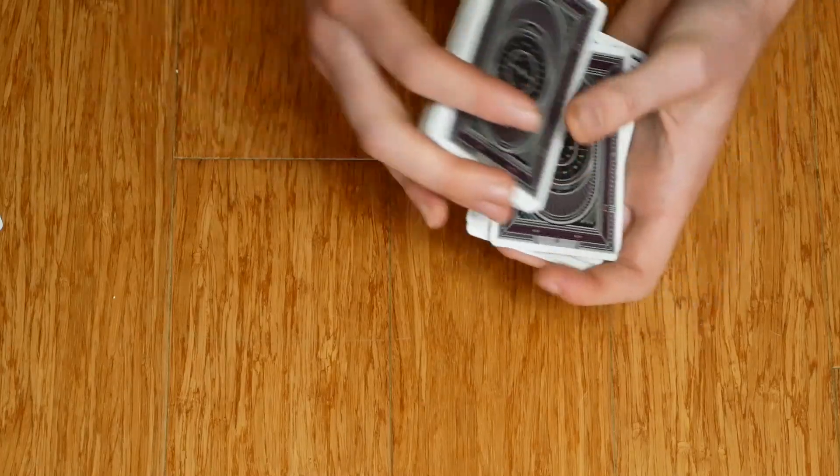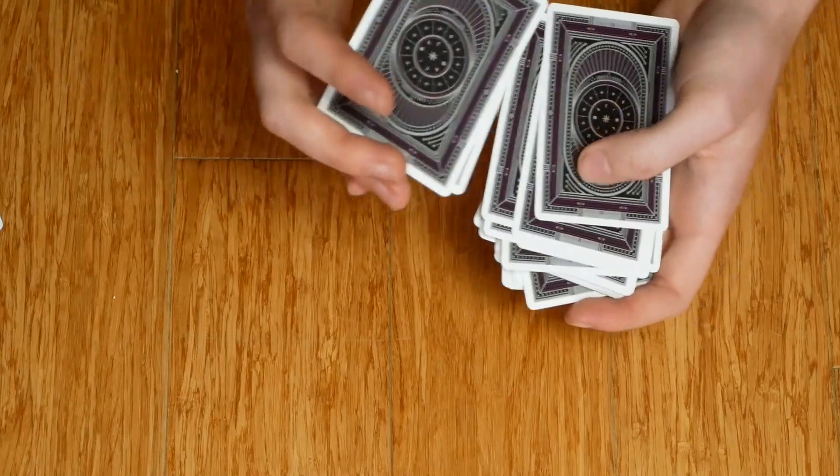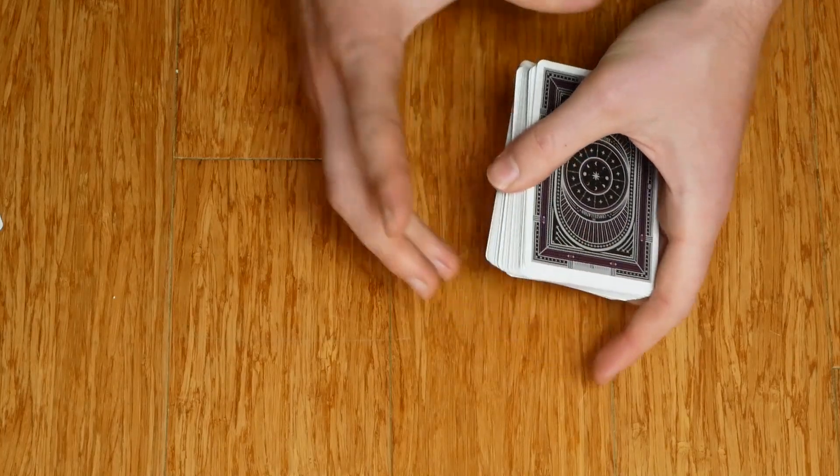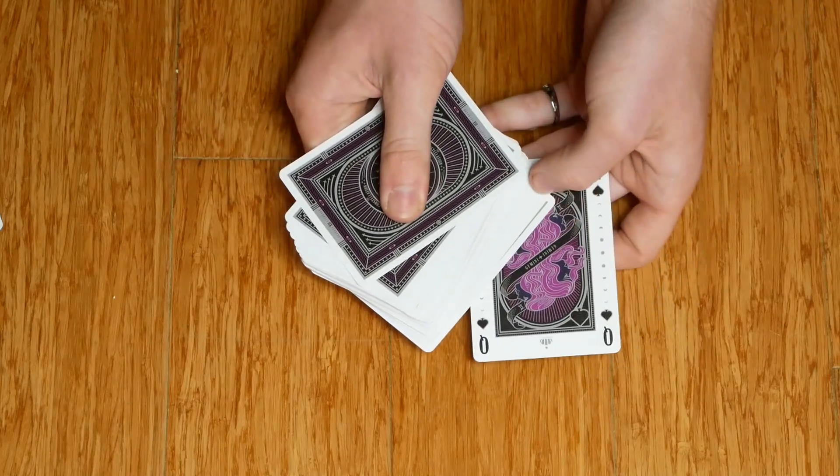And then I'm going to shuffle it so that card stays on the bottom. I'll show you that again. Now, even after I've shuffled it, you can still see that the card that we chose, the Queen of Spades, is still on the bottom there.